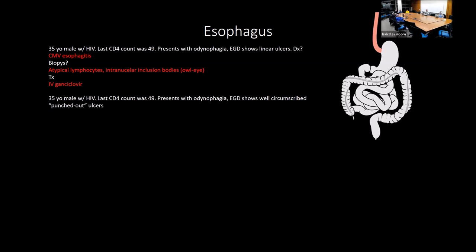Same patient with CD4 of 49, but EGD shows well-circumscribed punched-out ulcers — that's HSV esophagitis. Biopsy shows multinucleated giant cells, eosinophilic inclusions, and ground-glass nuclei. Treatment is acyclovir.